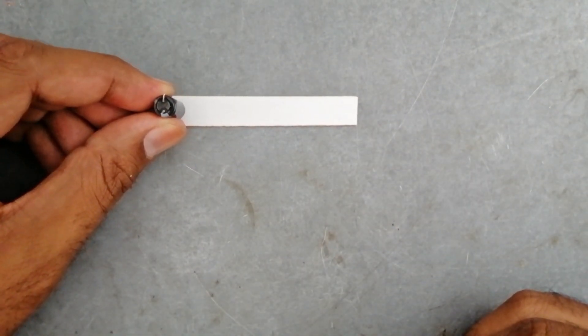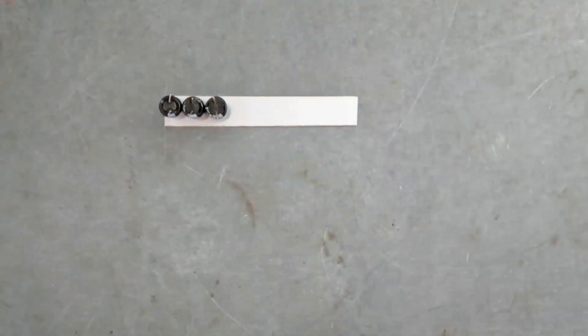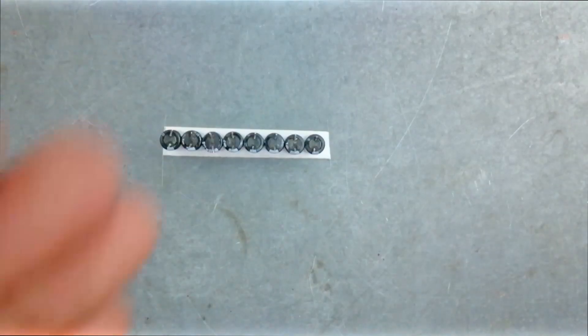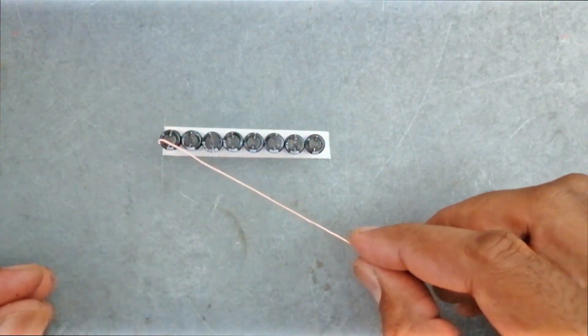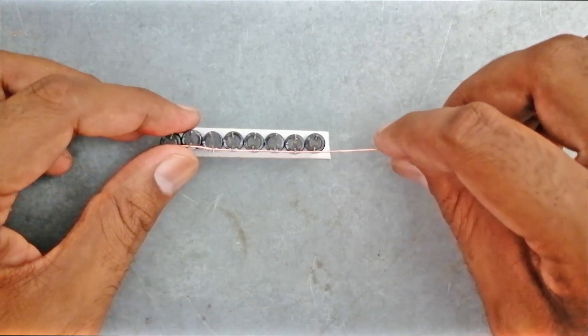Let's attach all the capacitors in one line. This is a wire. We will connect all the negative terminals of the capacitor with the wire. Let's solder it.